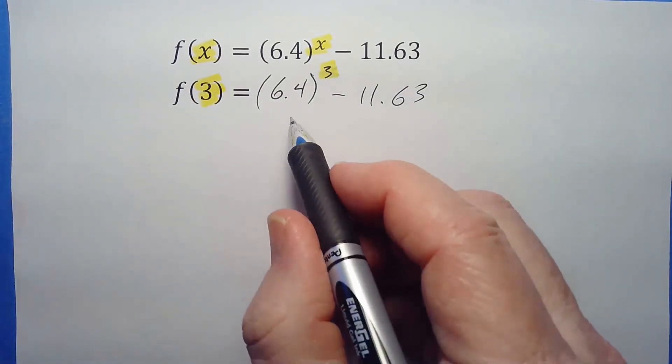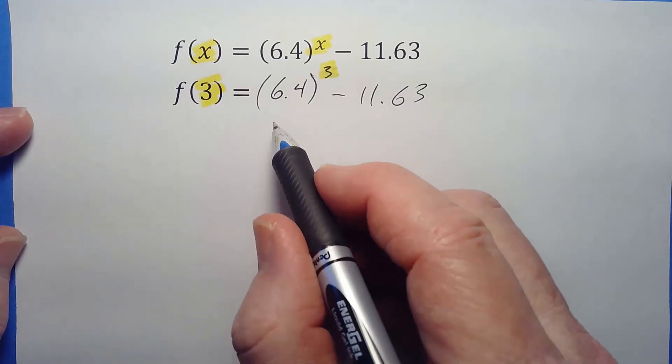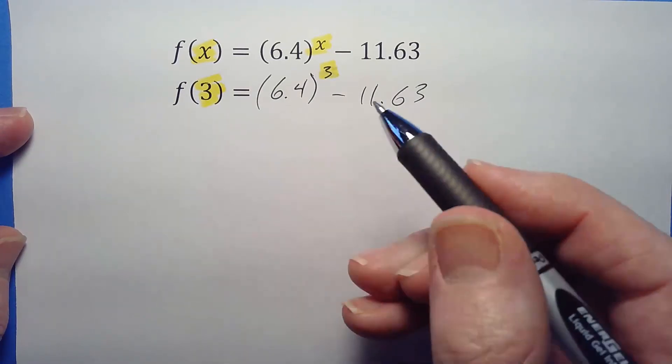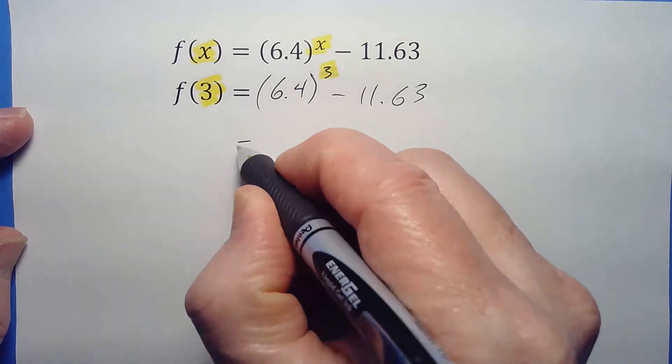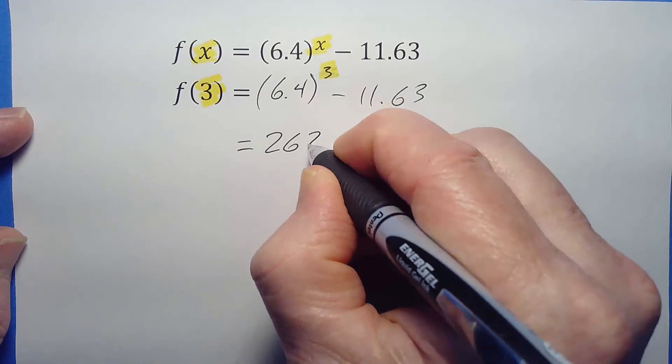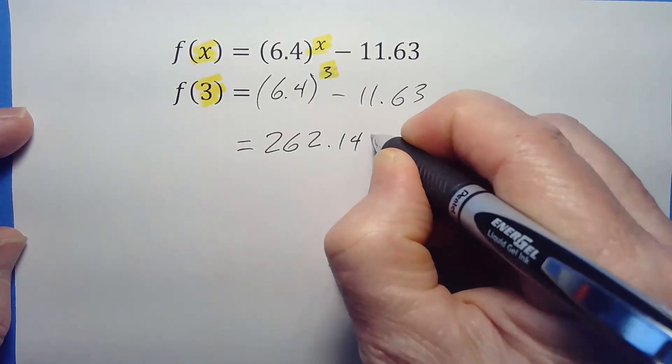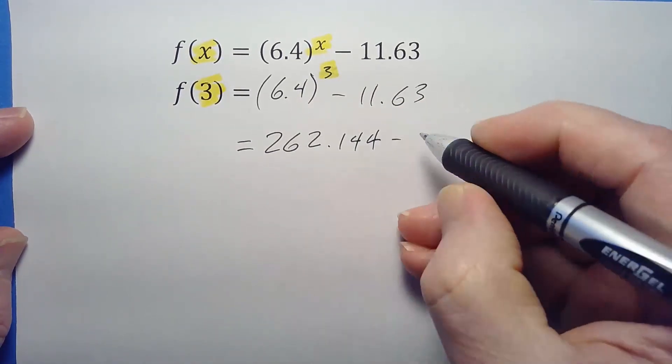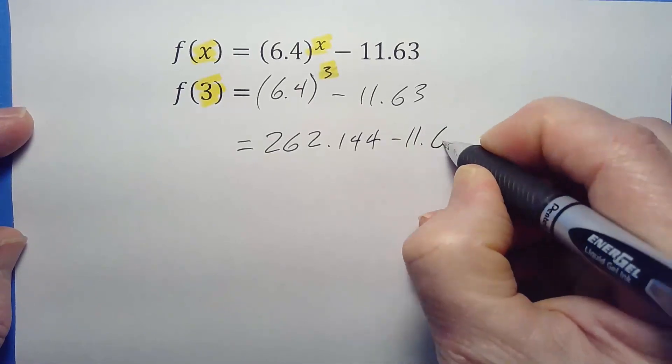On your calculator, very carefully work that out. 6.4 times 6.4 times 6.4. You're going to eventually get 262.144 minus 11.63.